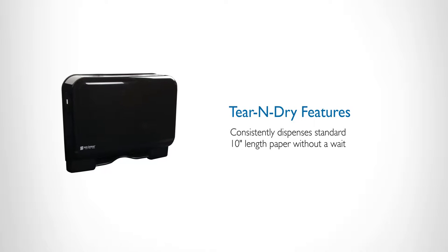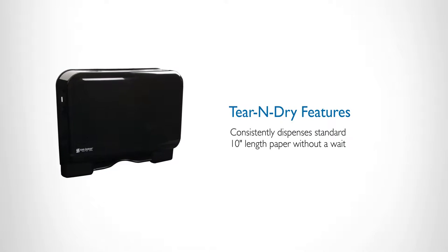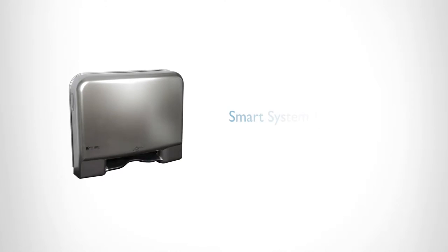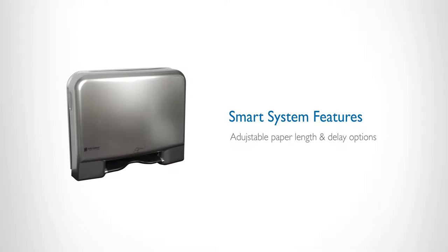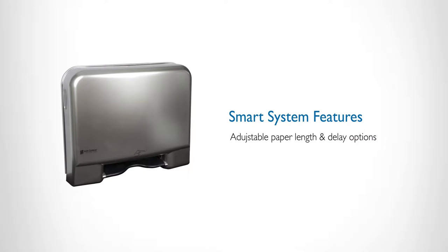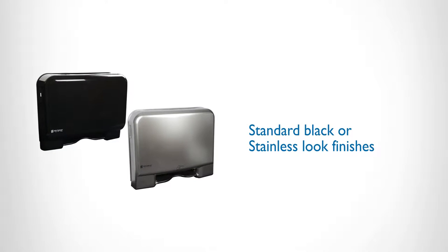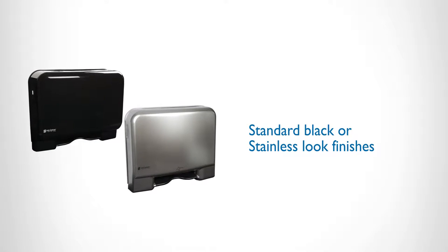Models are available with Sanjumar's tear-and-drive features that include exposed paper towel length and delay options, as well as smart system features, including stub roll, the choice of either exposed towel or touchless option, and adjustable paper length and delay options. Each model comes in either a standard black or stainless finish to accommodate most room designs.